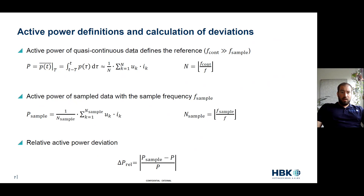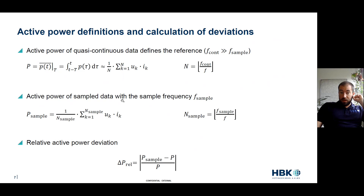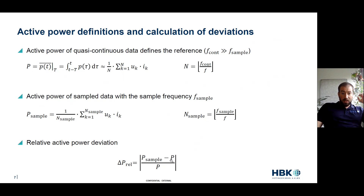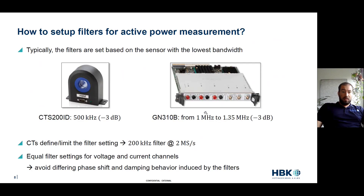For active power definitions: the active power of a quasi-continuous data set, where F-continuous is significantly greater than the sample rate, gives us our power equation — U times I for all samples divided by the number of samples to get the average. Active power sampled at the sampling frequency is the same story, just now the number of samples is that ratio. Our active power deviation is: sampled minus truth, divided by truth, to get the relative deviation. One gigahertz is truth; the various sample rates are compared against it.